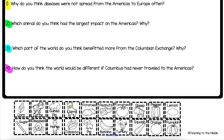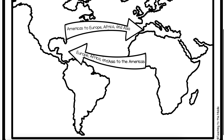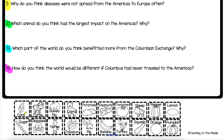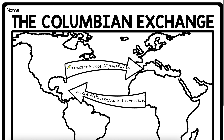Now that you've answered all your questions, let's talk about the pictures and the map. I'm going to color-code these pictures — I'm not going to cut them out on the video, but I expect you to cut yours out. I'm going to say any product coming from the Americas to Europe, Africa, and Asia, I'm going to color yellow. Anything coming from Europe, Africa, and Asia to the New World, I'm going to color green. You can use any two colors you want.